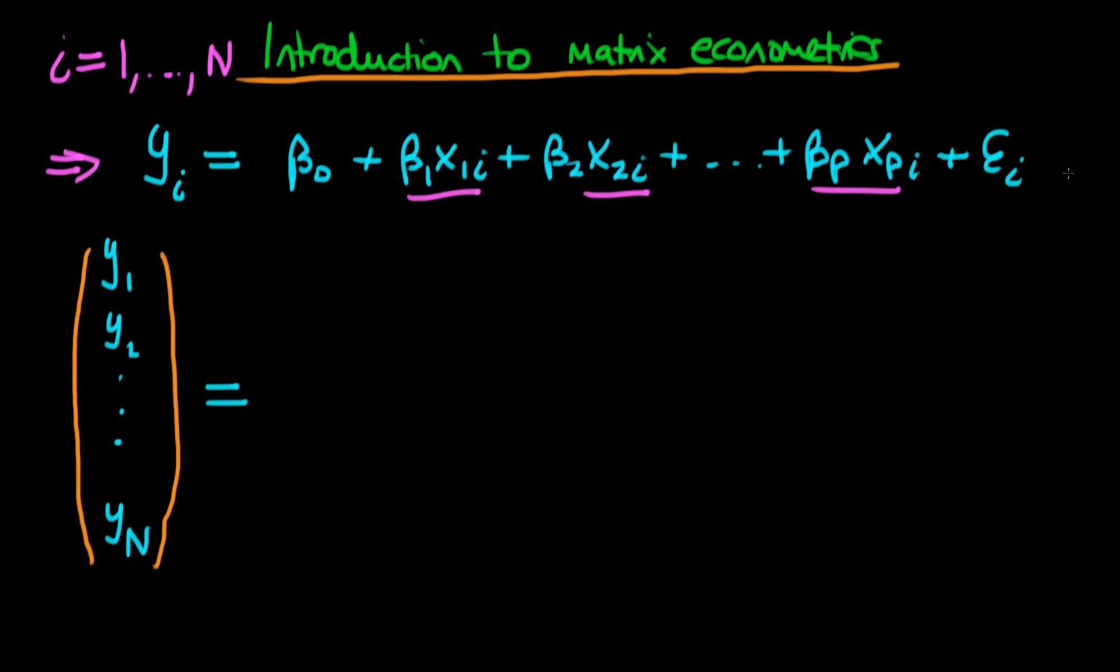And we can write this as being equal to another matrix or this is a vector strictly and we're going to write this in terms of a matrix which I'm going to define in a minute times a parameter vector. So this parameter vector here is going to have components which are just the parameter value. So its first value is going to be beta 0, its second value is going to be beta 1, then it's going to go beta 2 all the way through to beta p.